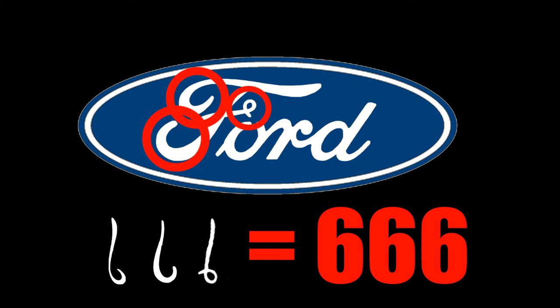This new loop in the F that many of us do not remember creates the third and final six needed to perpetuate the six six six matrix code. I believe this six six six coding is being used to control those who are asleep to the truth of what is really going on behind the veil. The more you learn to recognize these codes in the symbols of your everyday life, the closer you will become to breaking free from the ties you are bound by.